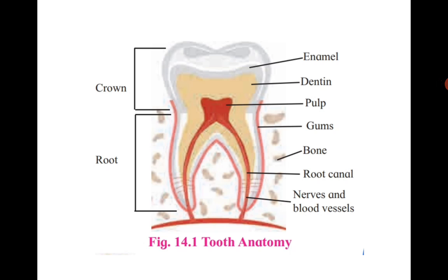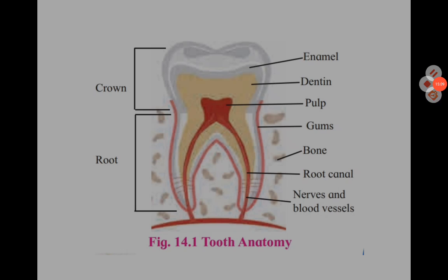The dentine encloses a pulp cavity. The pulp cavity contains pulp, which is connective tissue with blood vessels and nerves. The pulp cavity extends into the root of the tooth, forming the root canal. Cementum covers the dentine of the root of the tooth and attaches the root to the surrounding socket in the gum.